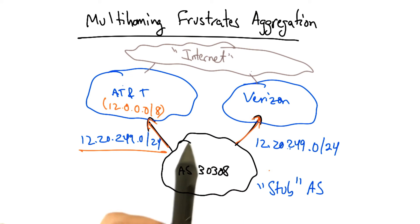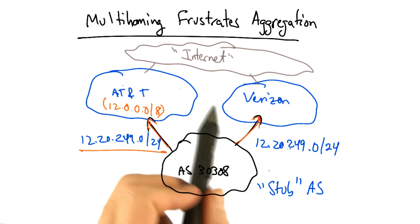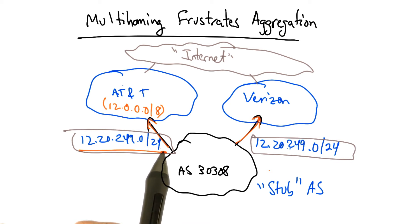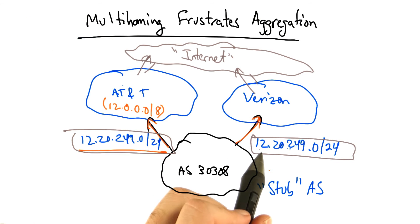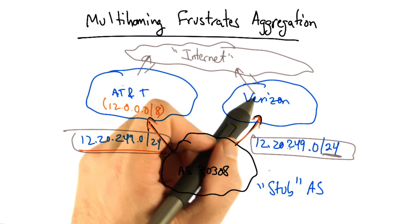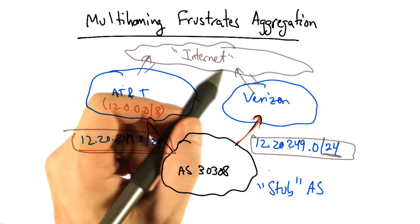The problem occurs when AT&T and Verizon want to advertise that prefix to the rest of the internet. Well, unfortunately, although AT&T might like to aggregate this prefix, as I previously described, it can't. If it did, Verizon would still be advertising the longer /24 via its upstream link.